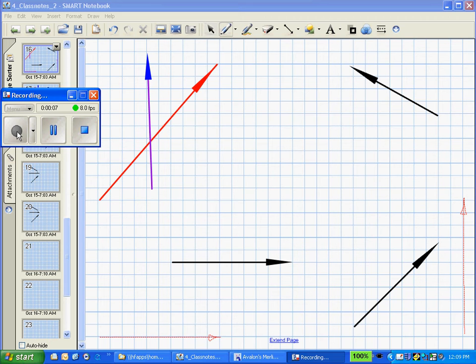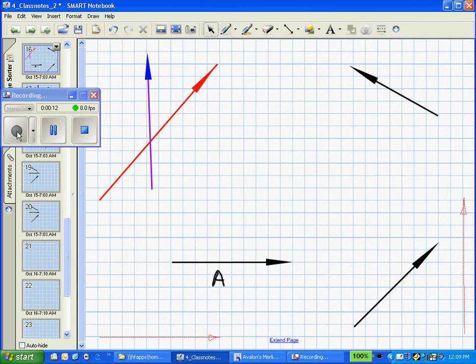We'll call them vector A, which we'll put here, and vector B, which we will move to here, noticing that we put the tail of vector B to the tip of vector A.